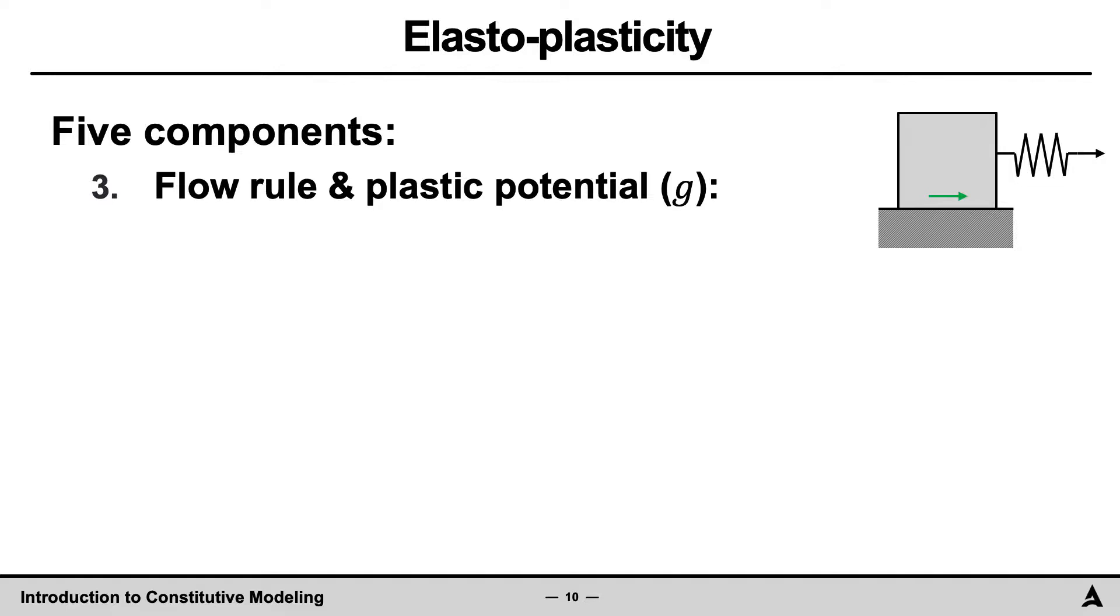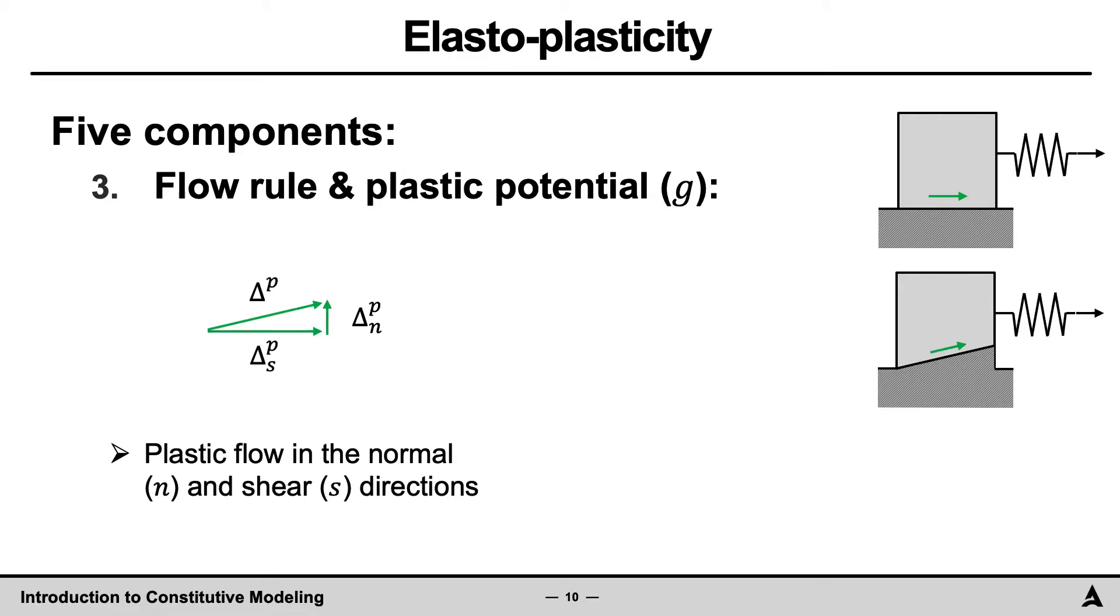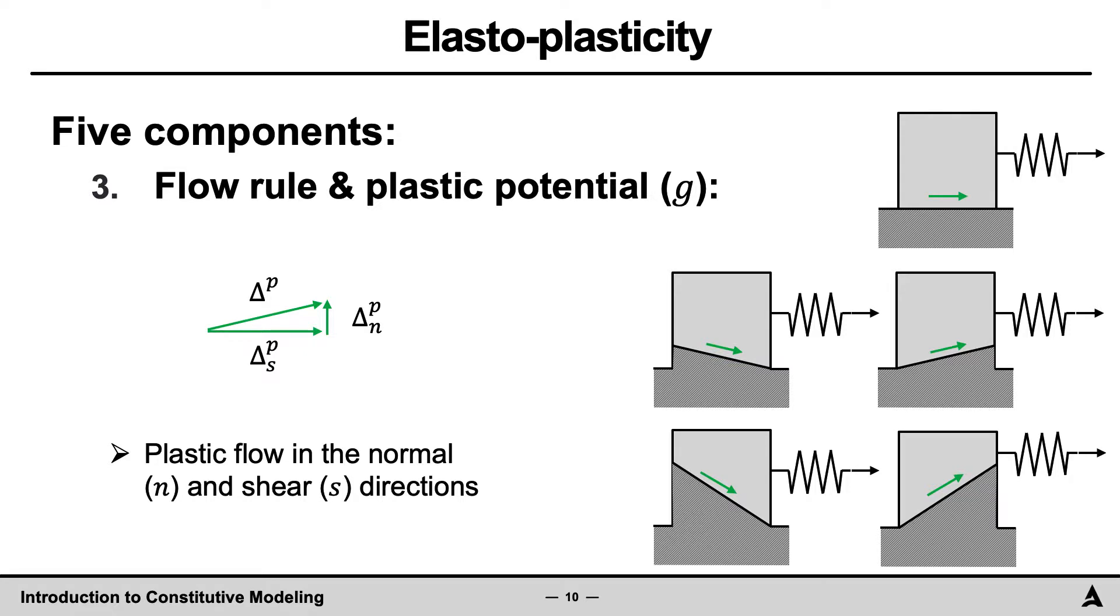What about if other directions of block displacement are considered? Here, the green arrow represents the direction of plastic flow. In the current case, the direction of plastic flow is in the horizontal direction. In this new case, the block is moving at an angle from the horizontal, if yielded, and the direction of plastic flow has changed. Now the direction of plastic flow is not only in the s direction, but there is also a component of plastic flow in the normal n direction. We now see that there are potentially two components of plastic flow here, one in the normal direction and the other in the shear direction. By considering other geometries, we will see that additional directions of plastic flow are also possible.